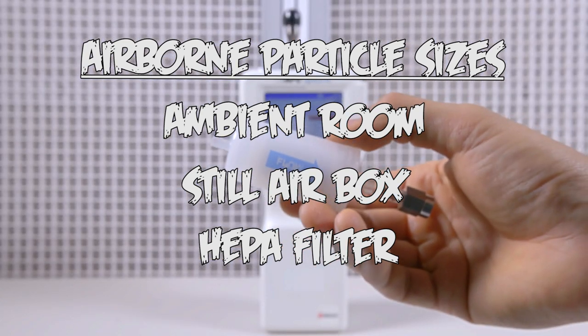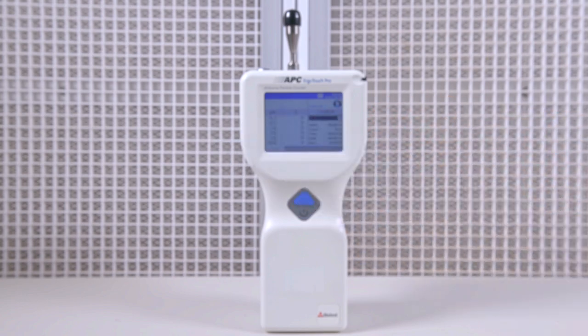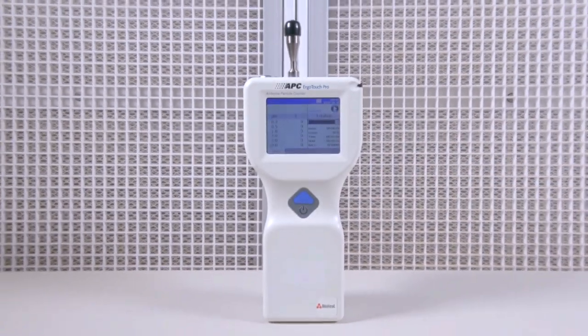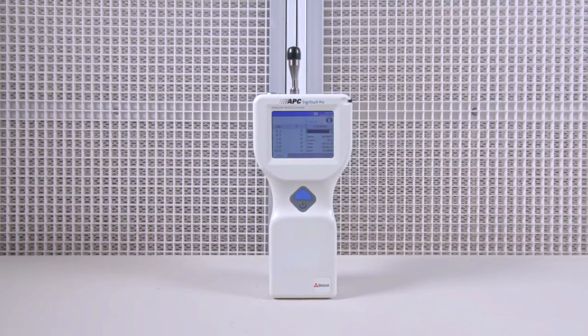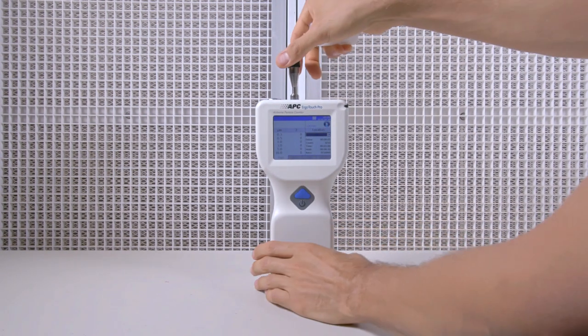Before each test, we will be calibrating our air particle counter with a HEPA filter attachment. This attachment will zero out the machine, so that way we know there are no issues with the counter, and we can get an accurate reading each time.